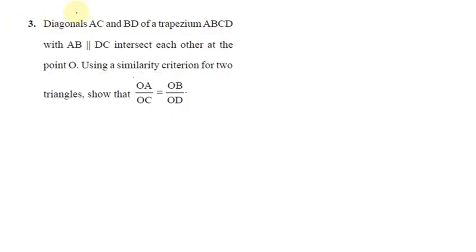Exercise 6.3, question number 3. Diagonals AC and BD of a trapezium ABCD with AB parallel to DC intersect each other at the point O. Using the similarity criterion for two triangles, show that OA by OC equals OB by OD.